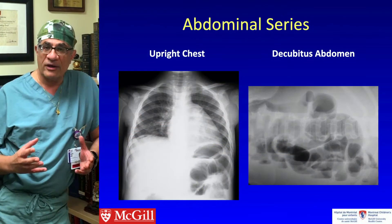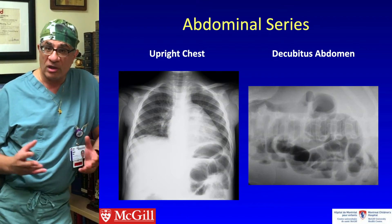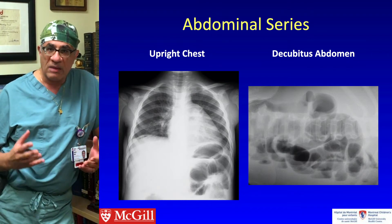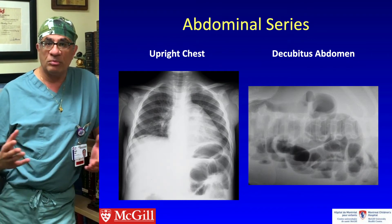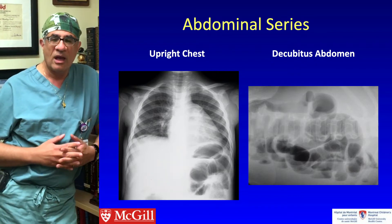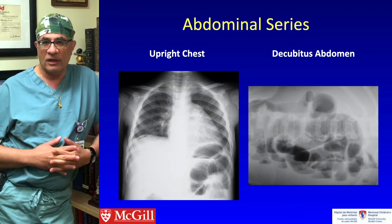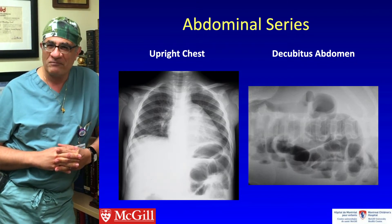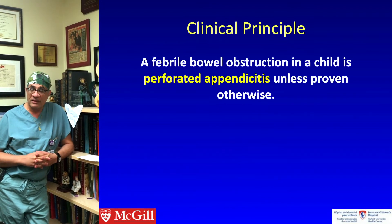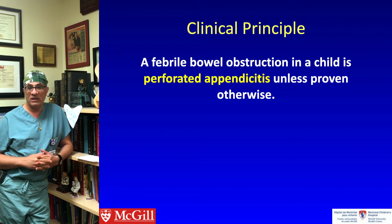This first scenario was a four-year-old with a febrile bowel obstruction and generalized peritonitis. Most of the answers had to do with some type of obstruction of multiple etiologies like volvulus, intussusception, bands, etc. But a few people said that this is perforated appendicitis until proven otherwise — and they are correct. A febrile bowel obstruction in a child is perforated appendicitis until proven otherwise; by far the most common etiology.